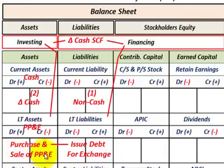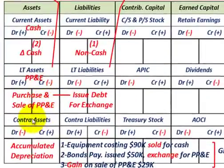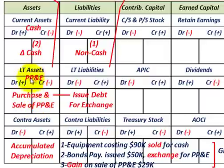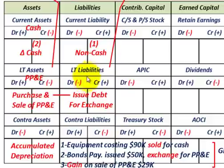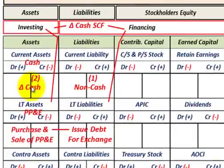Secondly, we're going to look at a separate sale of some additional equipment. When talking about long-term assets, you also have your contra-asset account — your accumulated depreciation account. For our example, we're dealing with property, plant, and equipment as investing assets, and accumulated depreciation has to be included. We also need to determine the actual change in cash for these transactions versus the non-cash part of the transaction.